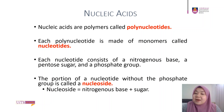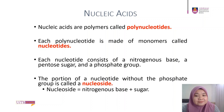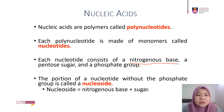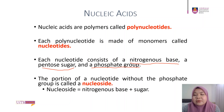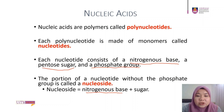Nucleic acids are polymers — I've mentioned this — and they are called polynucleotides. Each polynucleotide is made of monomers called nucleotides. Each nucleotide consists of three components: nitrogenous base, pentose sugar, and a phosphate group. The portion of a nucleotide without the phosphate is known as a nucleoside — that means only the nitrogenous base and the sugar without the phosphate.